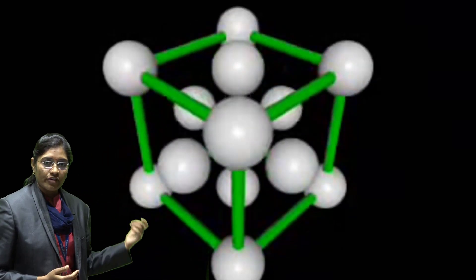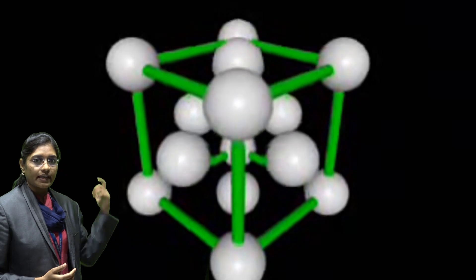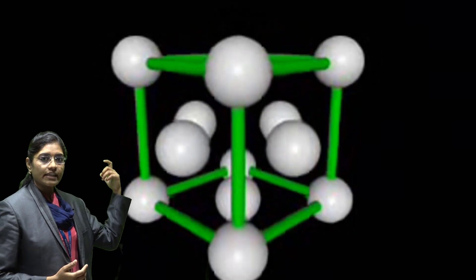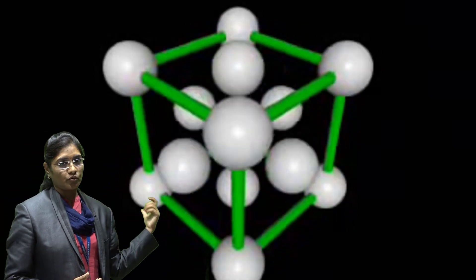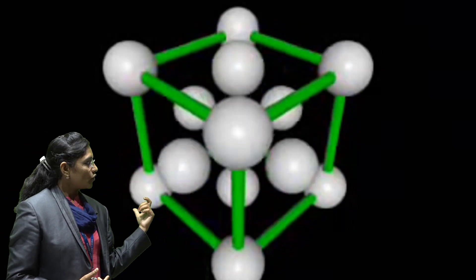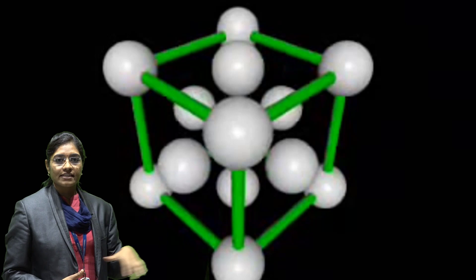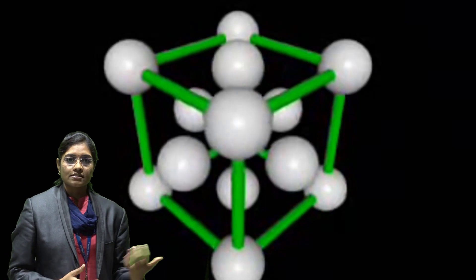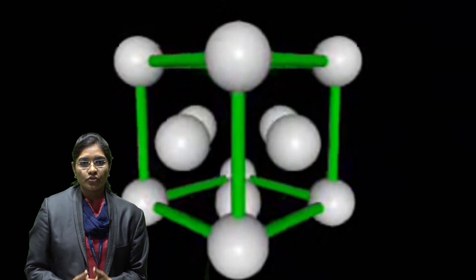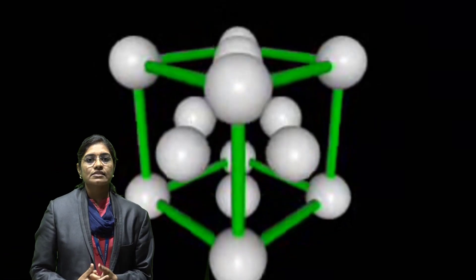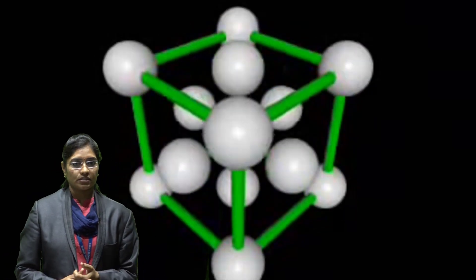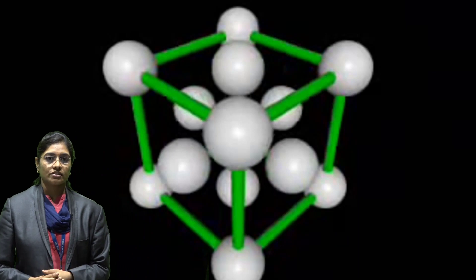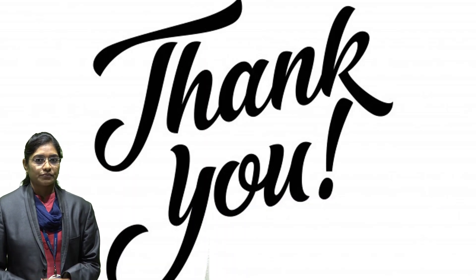Six are the face atoms and eight are the corner atoms of the cube. I hope you understand the concept related to unit cell, crystal structure and types of crystal structure. Thank you.